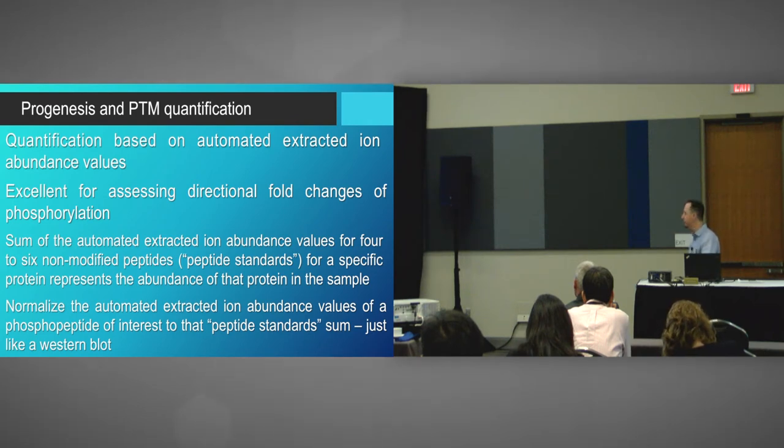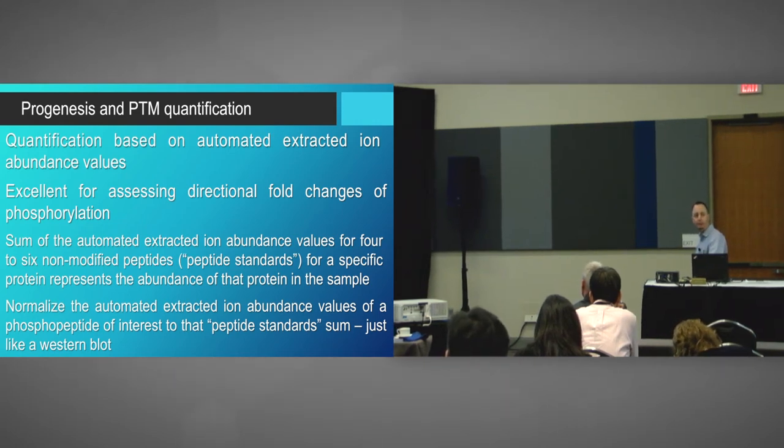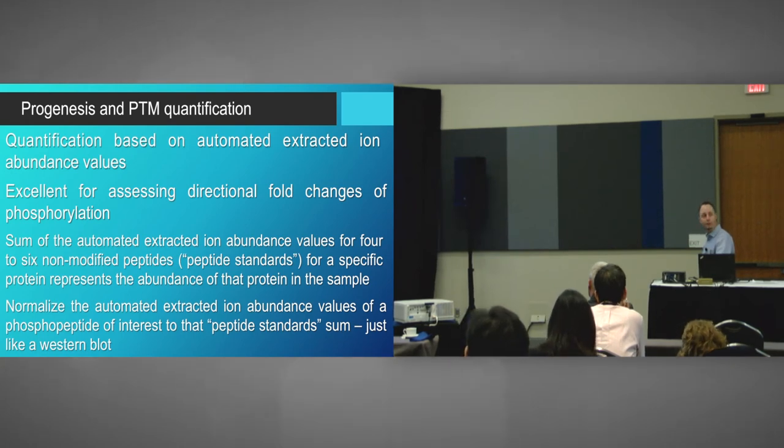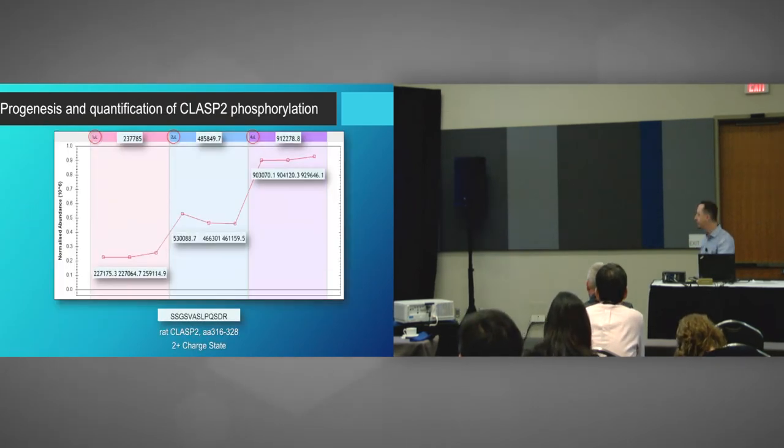And so it's excellent for assessing directional fold changes of phosphorylation. So for me, I'll do basal versus insulin stimulated. And what I'll do is I'll take six non-modified peptides. These are my peptide standards. And I'll get their extracted ion abundance values. And I'll sum them together to get the amount of my protein in the sample. And I'll normalize the extracted ion abundance value of my phosphorylation peptide, my phosphorylated peptide. And what I can do is I can do then a fold change of the effect of my treatment.